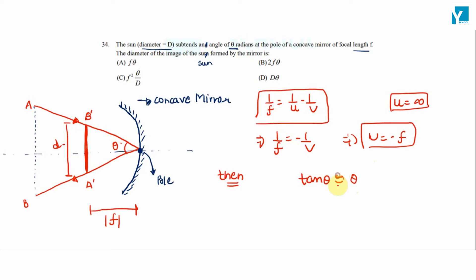Tan theta is approximately equal to theta for small angles. So theta will be equal to arc upon radius.